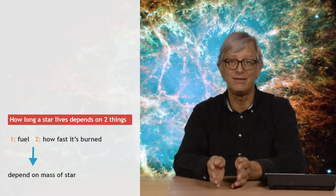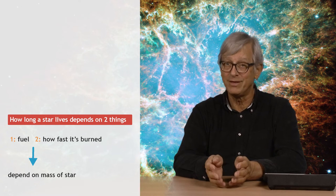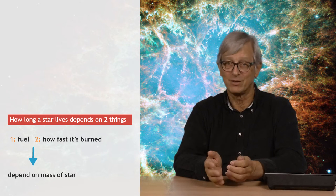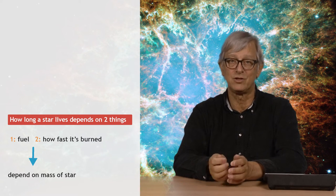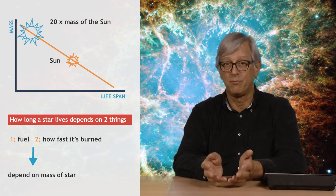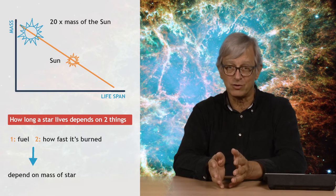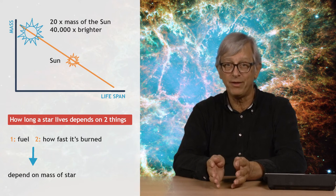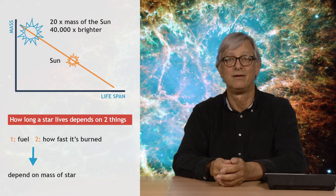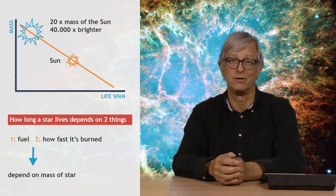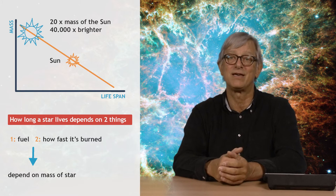Really massive stars, more than 10 times the sun, have a very different life from the sun, and they die very differently too. Take for example a star 20 times the mass of the sun. Such a star basically has 20 times the fuel, but we can see that it is 40,000 times brighter. So it burns the fuel 40,000 times as fast. Hence, it dies after just 5 million years instead of billions of years. It lives 2,000 times faster than the sun.